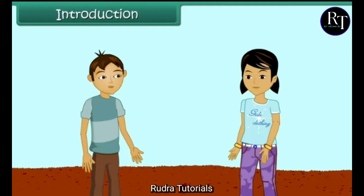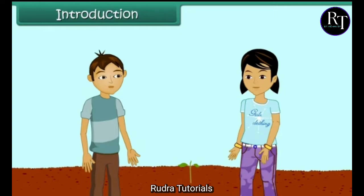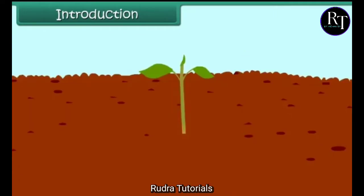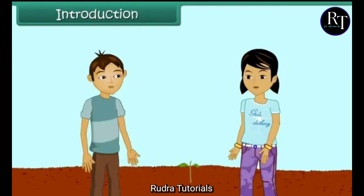Look, Ruchika, there is a new plant arising in the soil. There are only two small leaves coming up in the soil. Ruchika, do all the plants grow up like this only?